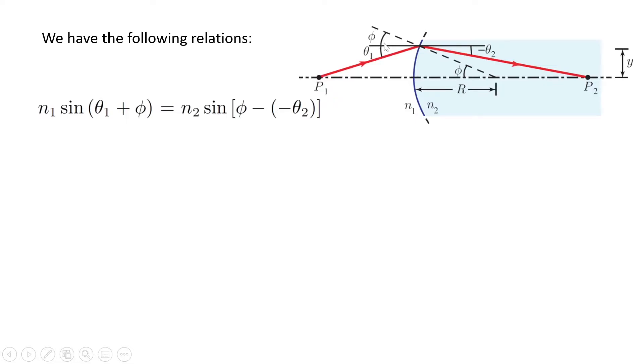The refraction angle is phi minus this angle, because this is phi and the total angle here is also phi. Phi minus this angle, which is shown by minus theta 2, where the minus sign comes from the convention, and we have seen another example in the previous videos.